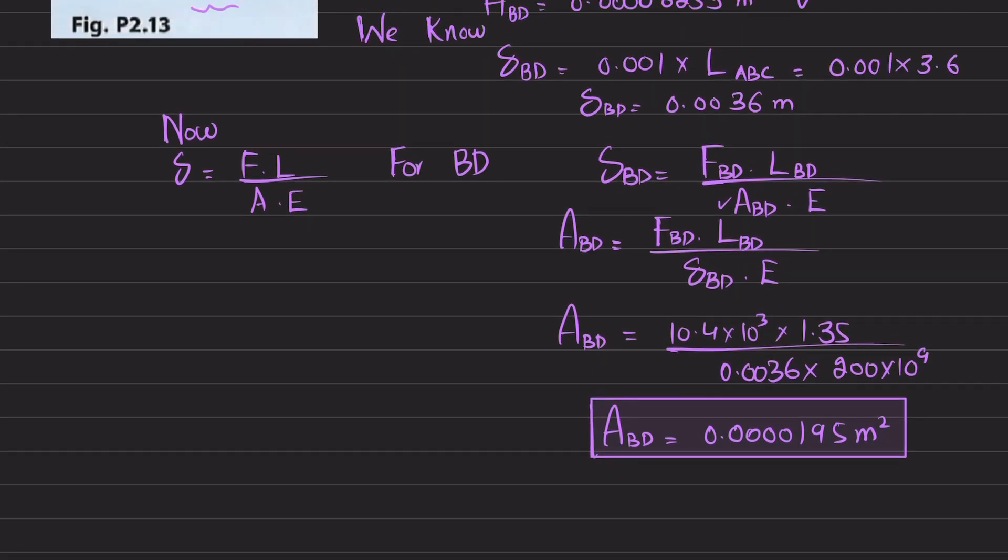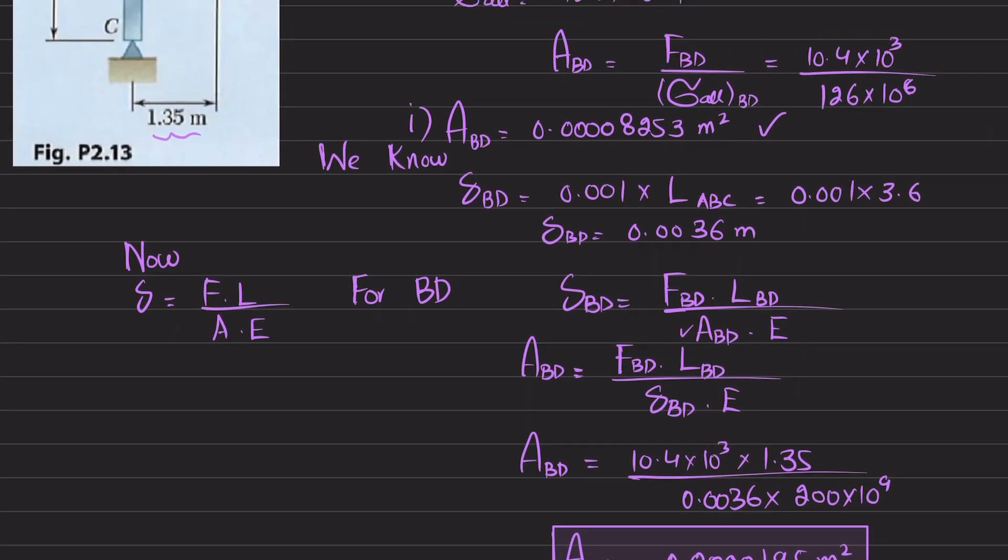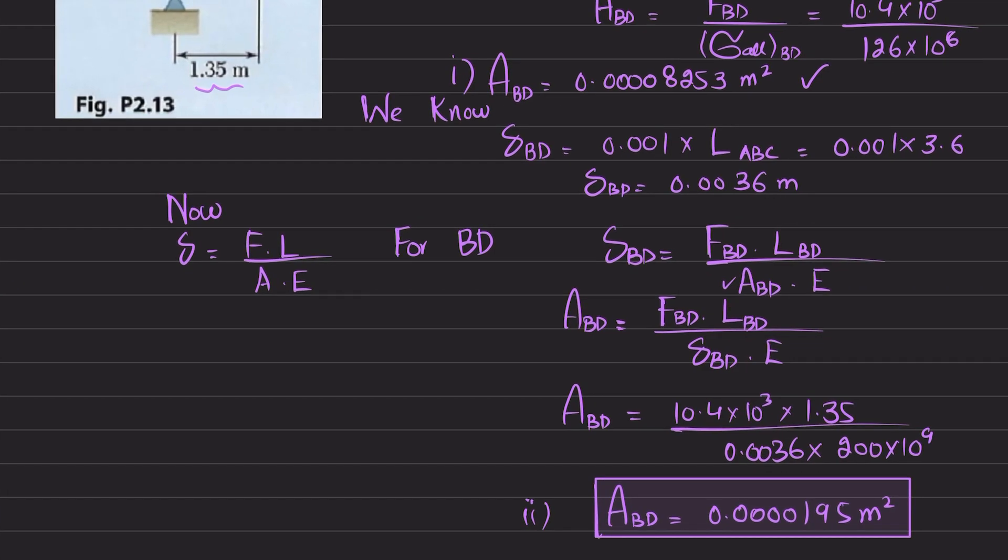Now, we have two areas. One is this one and the second one is this one. So you can see first one is higher, so we will take, what to choose. So take the largest area for calculating the diameter. Why? Because when you put stress is equal to force per unit area, so force is 10.4 kilonewton. And when you put this area, this area over here, the stress will be greater than the allowable stress. So we neglect this, and we will choose this area. So take the largest area.